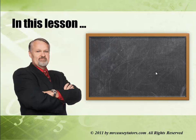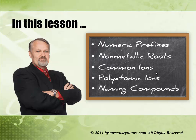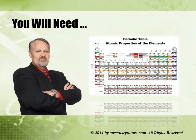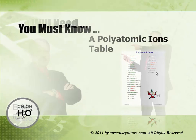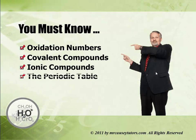In this lesson, you will learn numeric prefixes, the non-metallic roots, common ions, polyatomic ions, and naming compounds. You will need a periodic table, unless you've memorized it. You will also need a polyatomic ions table — a little later in this lesson I'll show you how to get that if you don't have one. You must also know oxidation numbers, covalent compounds, ionic compounds, and the periodic table.